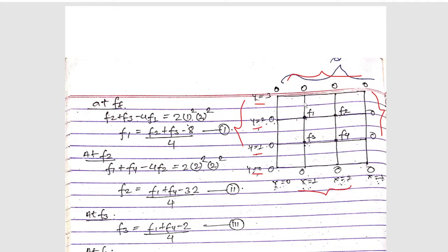Here we will use the plus pattern — just like we solved a numerical for the Laplace equation. In order to calculate the value at f1, we use the neighboring points: f2, f3, and minus 4f1. The boundary values contribute 0, so those terms drop out.